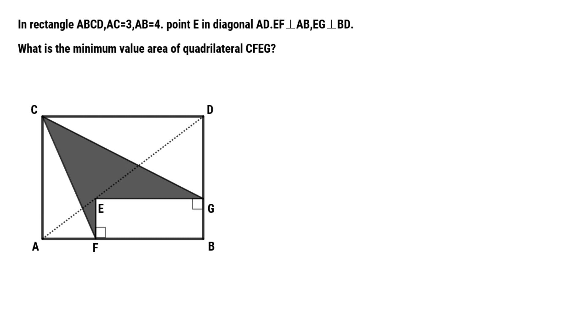Let's check this diagram. It's hard to find the minimum value directly, but if we connect CE, the shaded region is divided into two triangles.